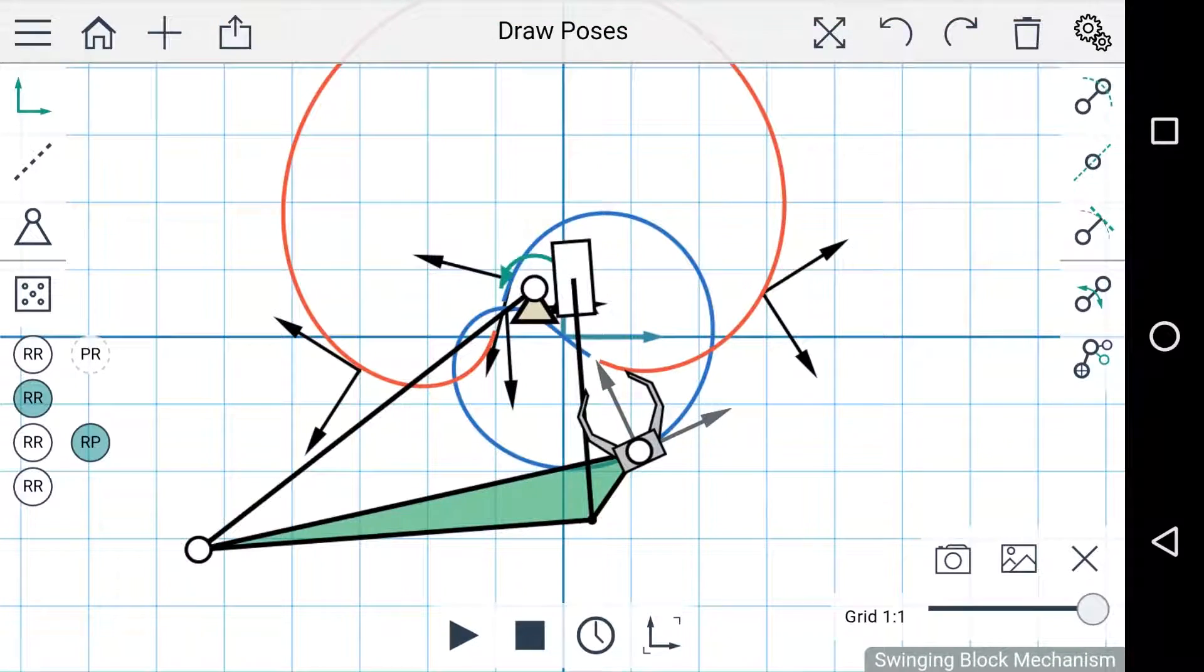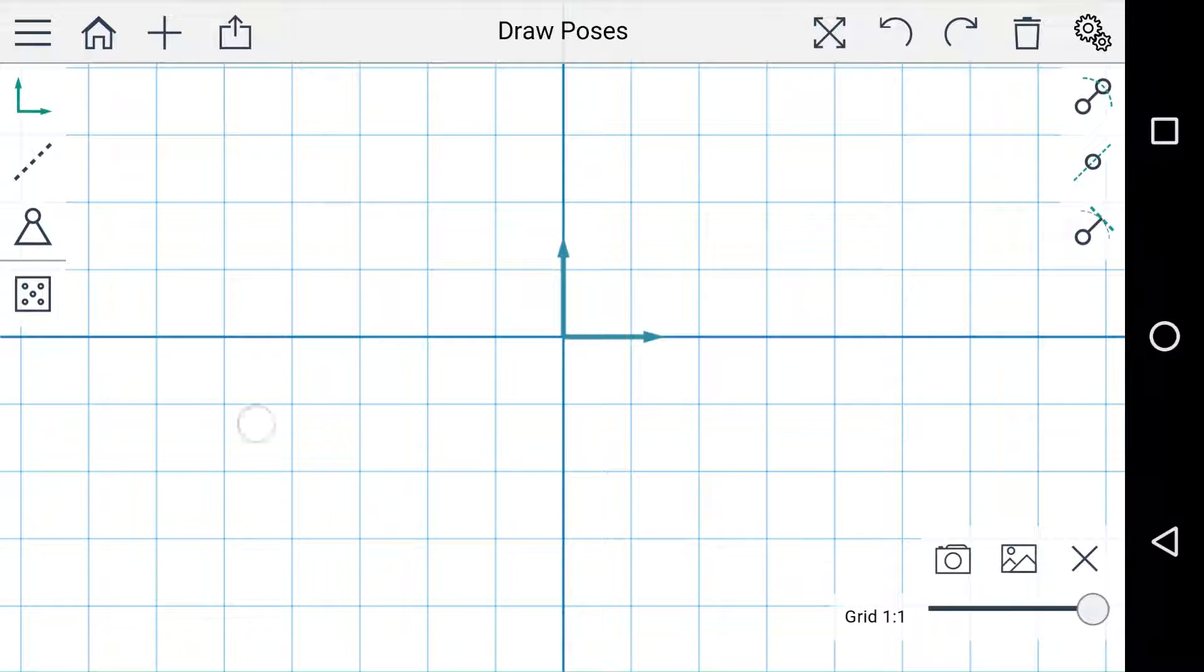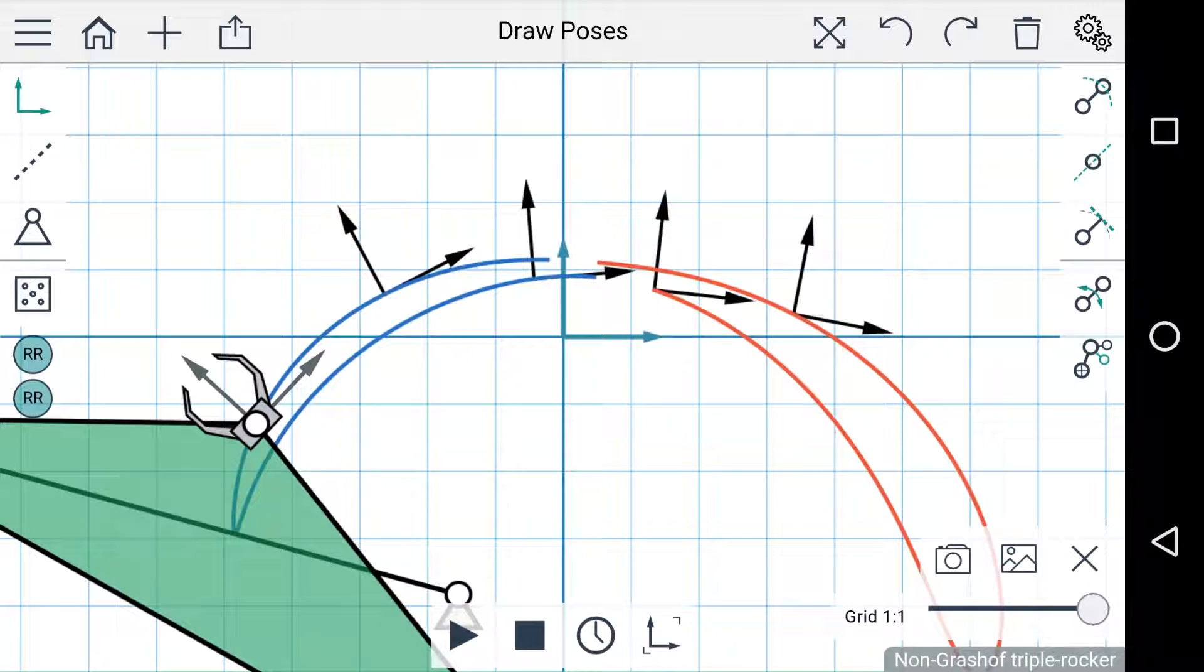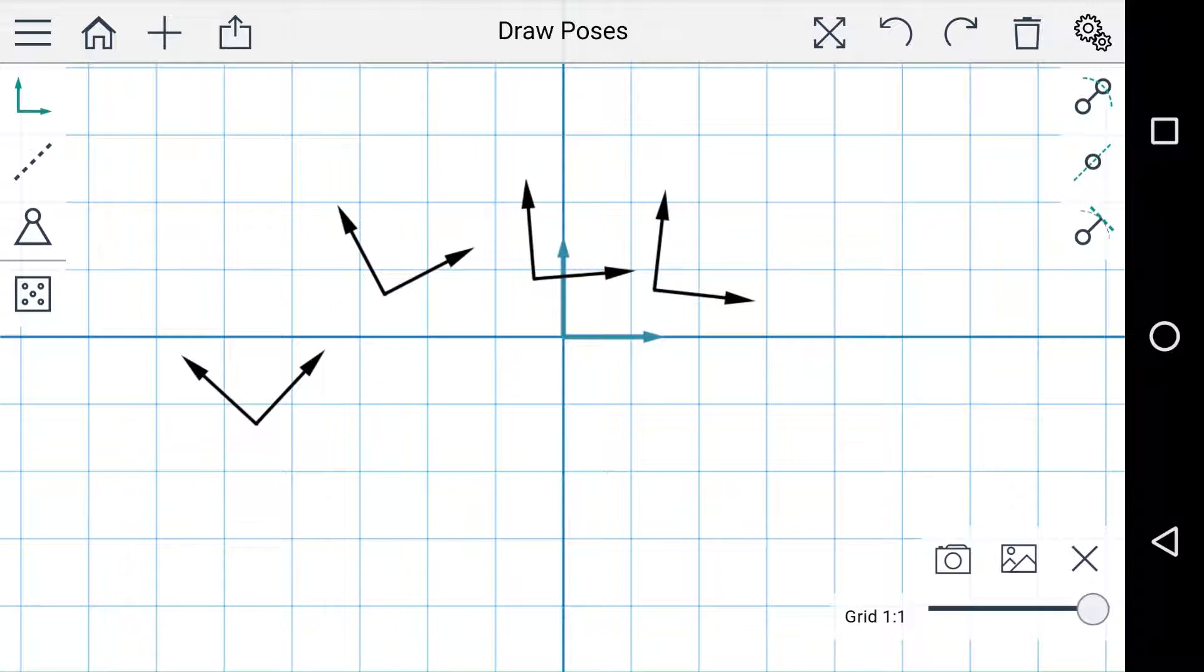Now moving across on the menu bar here, there's a button to delete a linkage so that's pretty straightforward. If I draw a bunch of poses here and select a single pose and press delete, it deletes just that object.